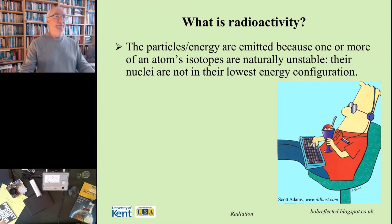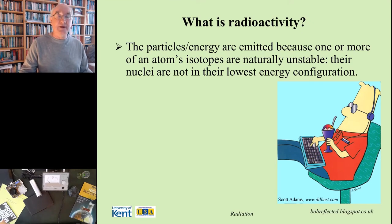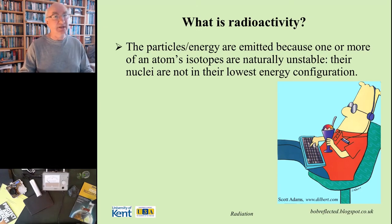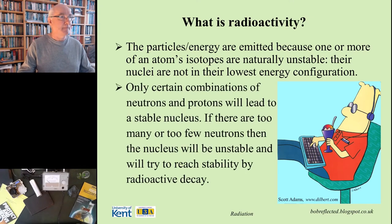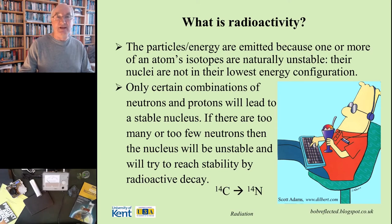What is it that causes radioactivity? These energetic particles — or pure energy in the form of a photon of light — are emitted because the nucleus is unstable. It's not sitting in its lowest energy, most stable state. It gets to that state by shedding the excess energy associated with the unstable nucleus. It's certain combinations of neutrons and protons — the ratio between the two — that determines whether one isotope is stable or unstable.